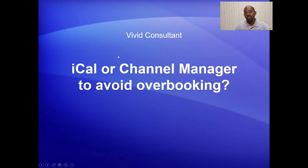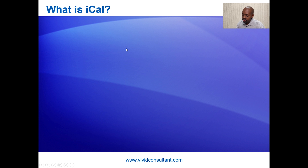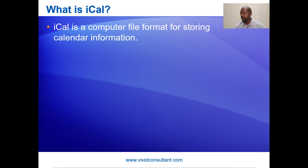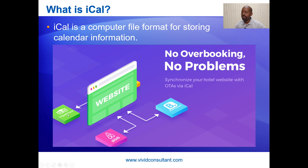iCal or a channel manager — which one should you use to avoid an overbooking? So what is iCal in the first place? iCal is a computer file format for storing calendar information. Think about it for a second: assuming you have your website and you have about 20 rooms that you rent, you also would like to advertise those on Booking.com, Airbnb, and TripAdvisor. When you rent one of your rooms on Booking.com, you would want that to be reflected on your website, Airbnb, and TripAdvisor — and iCal will allow you to do that.